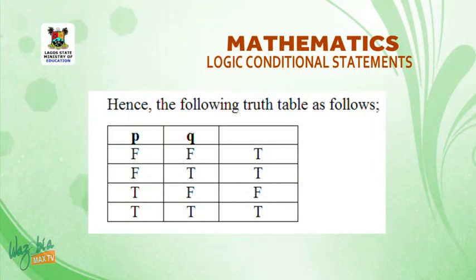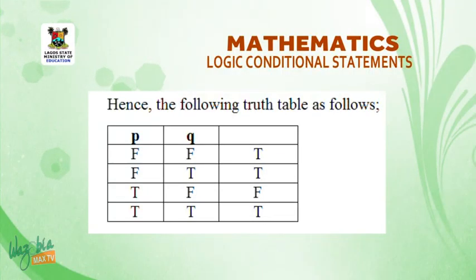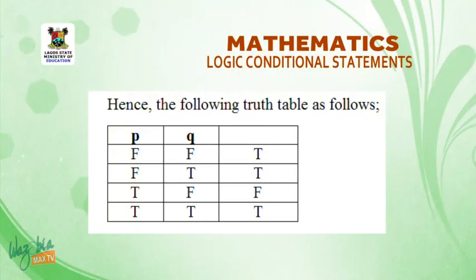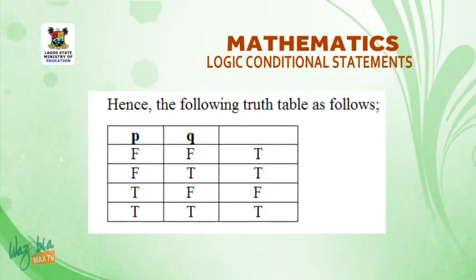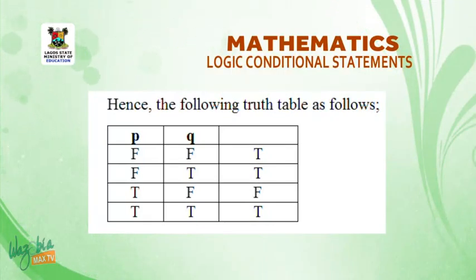Hence the following truth table with columns: negation p, negation q, and negation p implies negation q. Under negation p: F, F, T, T. Under negation q: F, T, F, T. The results for negation p implies negation q are T, T, F, T. That means: F and F gives T; F and T gives T; T and F gives F; T and T gives T.